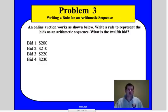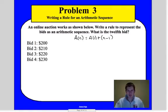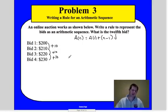So writing a problem, we're going to look at that formula. We're going to look at it. Again, we always kind of want to write this down. A(n) is equal to A(1) and then plus the n minus 1 times D. So an online auction works as shown below. Write a rule to represent the bids as an arithmetic sequence. So as we work through this problem, we want to look at what's the common difference. Well, this is an increase of 10. We increase by 10 again. And then we increase by 10. So basically what's happening is this online bidding system, each bid is increasing by $10 every time.